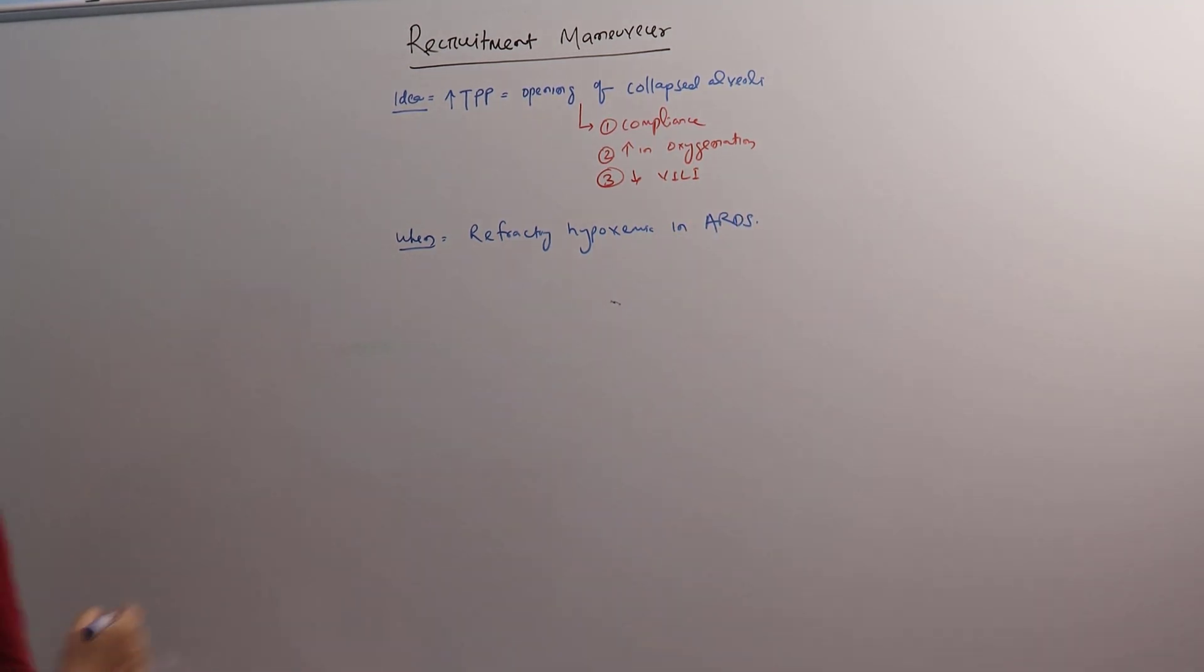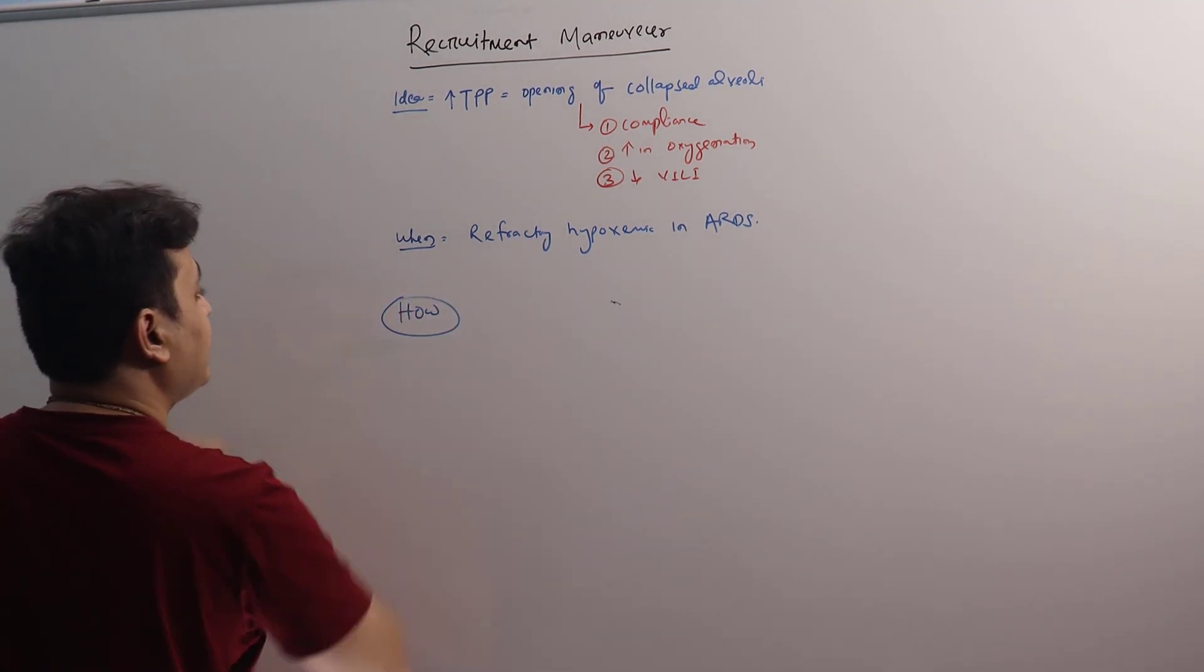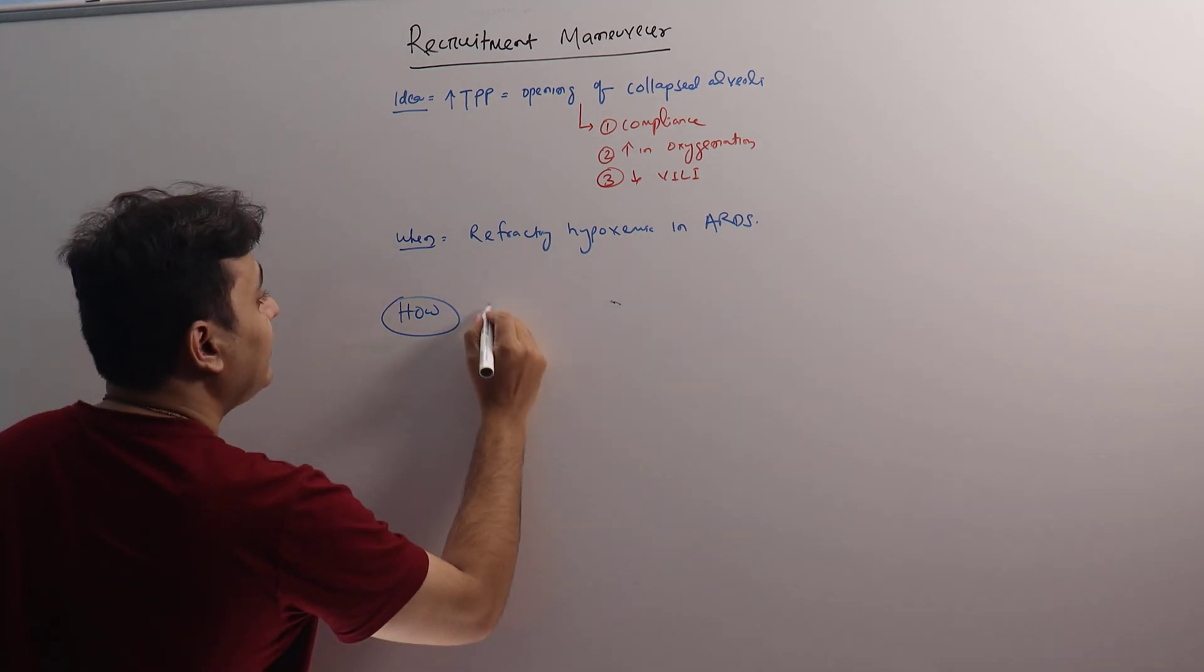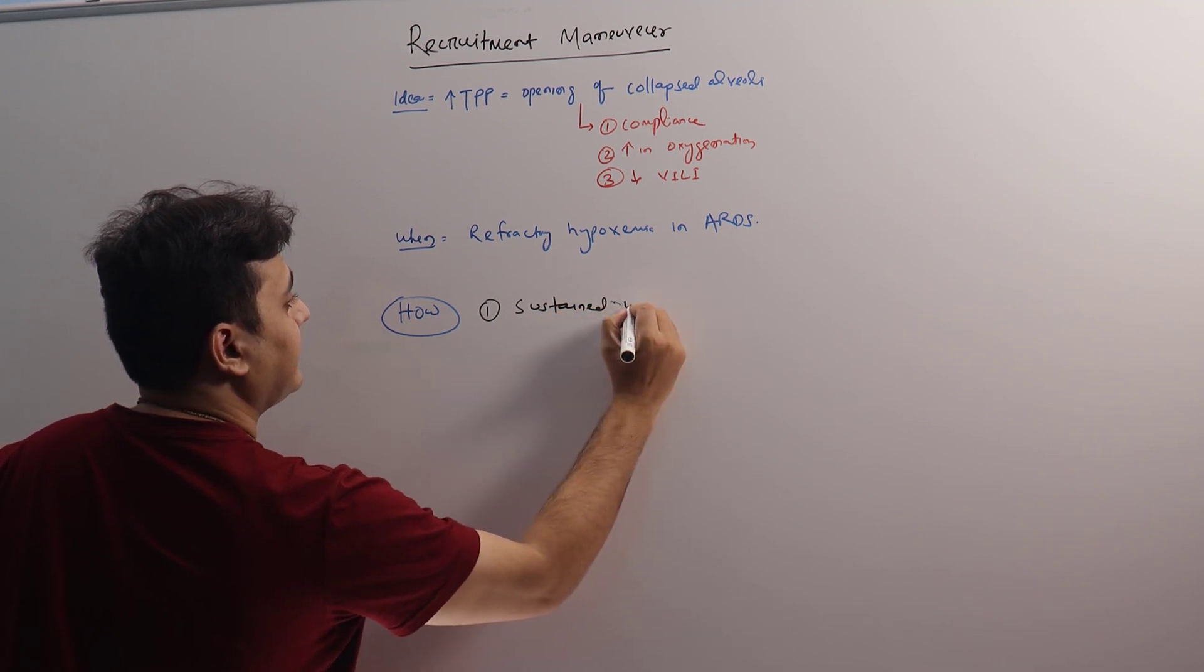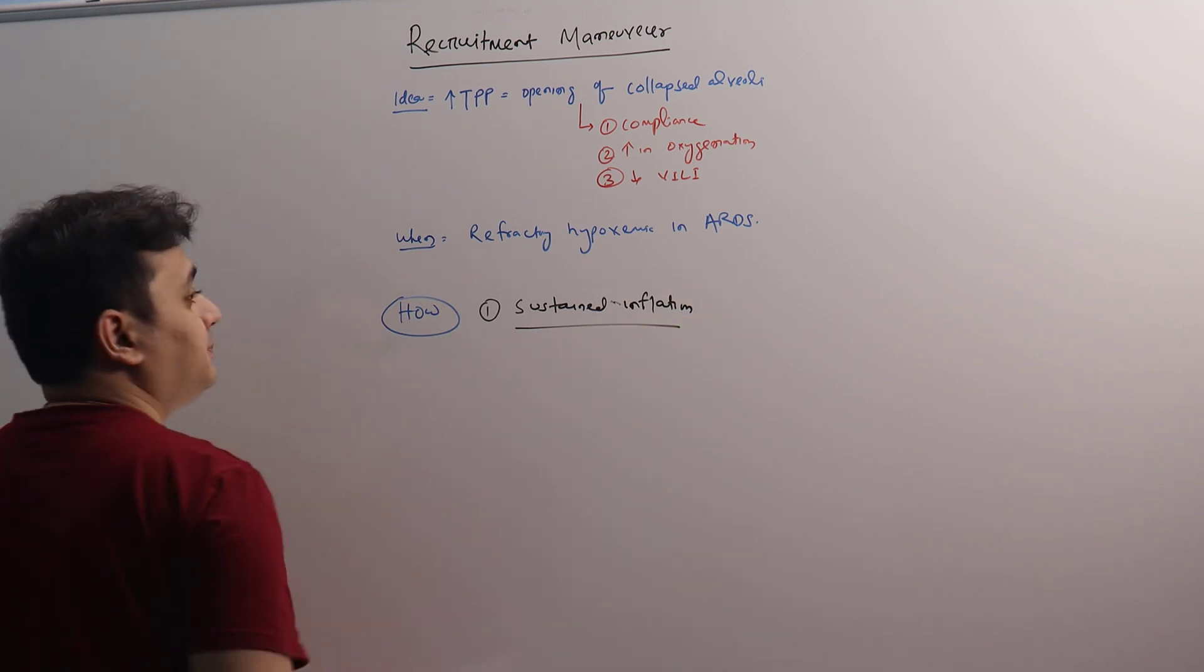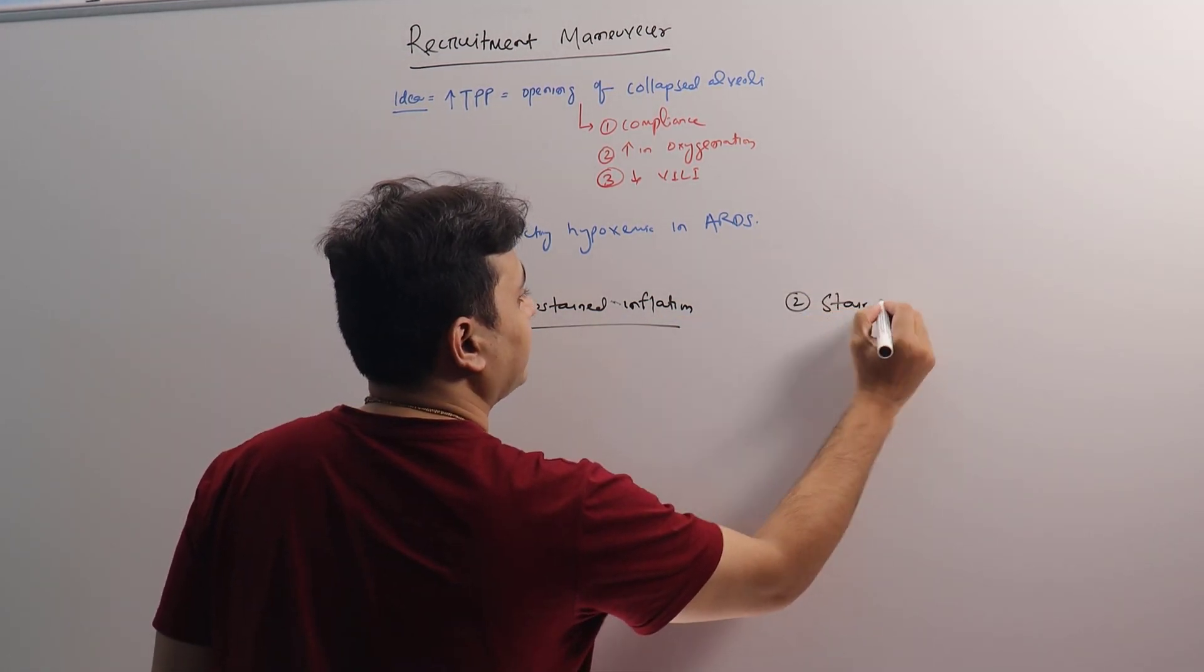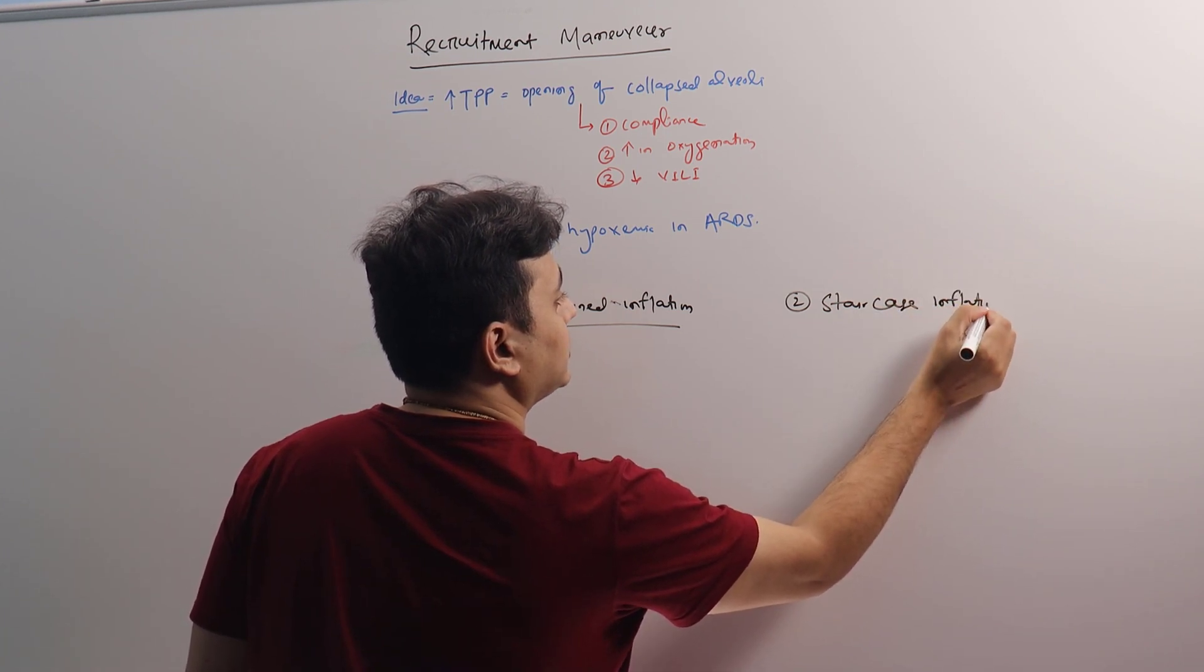How to do it? I divide it into two types. Number one will be sustained inflation, and number two will be staircase inflation.